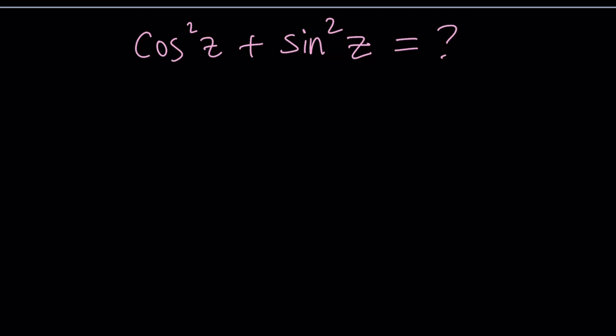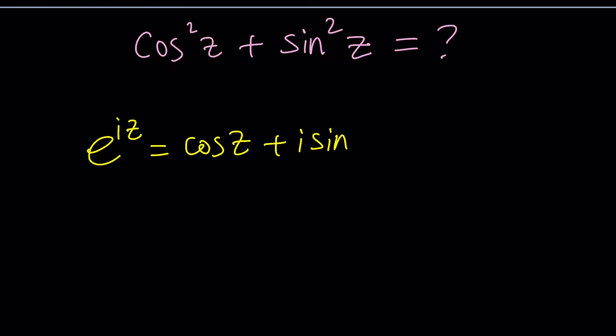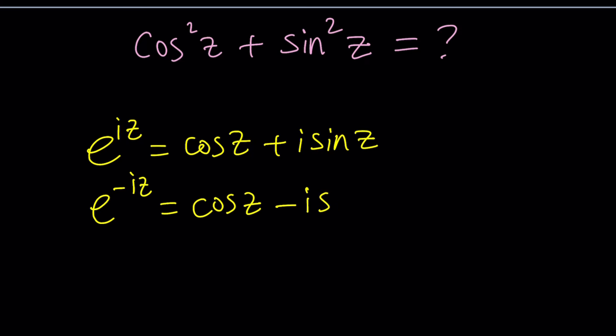What do we know about the polar form of a complex number? If you have something like e to the power iz, you can write it as cosine of z plus i sine of z. And then if you replace z with negative z, you get e to the power negative iz, and the cosine of negative z is the same as cosine of z, but sine is odd, so it's going to bring a negative sine.